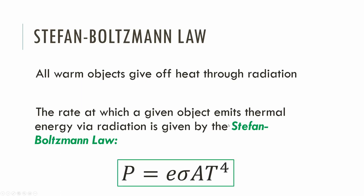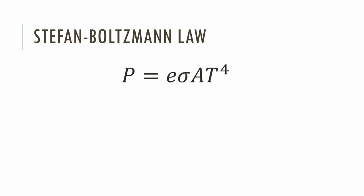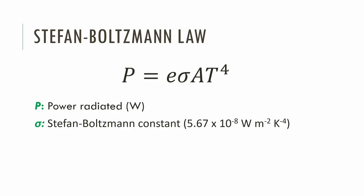Here's the equation — it's a data booklet equation. P, of course, is power, so it must be measured in watts. A watt is a joule per second. The number one most important unit for you to be very comfortable with is the watt. So P is about the power — it's how much power gets radiated by an object of a certain temperature and some other stuff. The sigma here is a constant. That's a constant that's in the front of your data booklet. It's got crazy units to make the math work out, but it's always that number — just a constant.